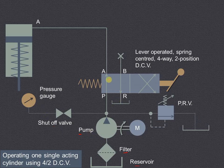Now this is the 4 by 2 direction control valve which is lever operated. So this symbol is for lever operation of the 4 by 2 direction control valve and it is spring control or spring offset.